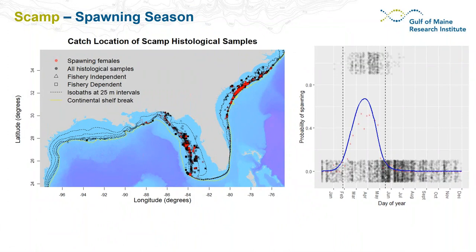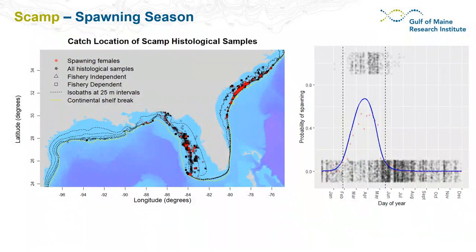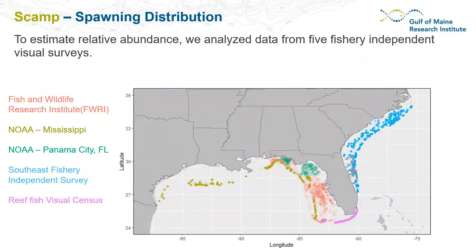We used that model to predict the likelihood of scamp spawning throughout the year. The marginal effect of day of year defines the scamp spawning season used throughout our simulations. The dashed lines represent the endpoints — late February and early June — and within that season we release more virtual larvae when the model predicts a high probability of spawning, with the most particles released in April and fewer in March or May when spawning probability is low.